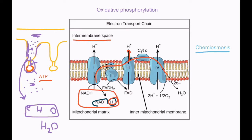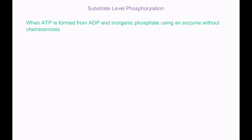There is also something known as substrate level phosphorylation, which is when ATP is formed from ADP and inorganic phosphate using an enzyme, without chemiosmosis. In glycolysis and the Krebs cycle, ATP was formed this way — that was substrate level phosphorylation, unlike oxidative phosphorylation where ATP is formed by ATP synthase.